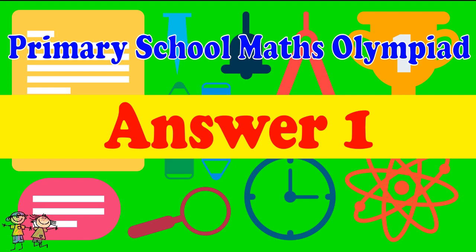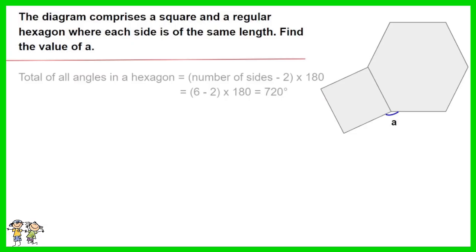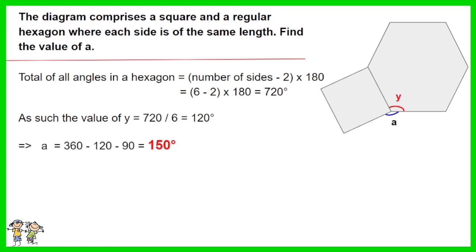Answer for Question 1: Total of all angles in a hexagon equals number of sides minus 2, then times 180. The result is 6 minus 2, then times 180, which gives you 720 degrees. As such, the value of Y is 720 divided by 6 equals 120 degrees. Thus A equals 360 minus 120 minus 90. The answer is 150 degrees.